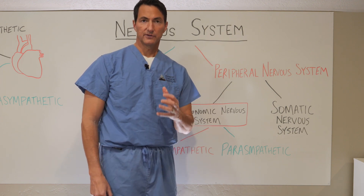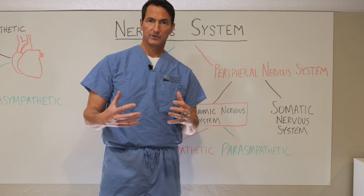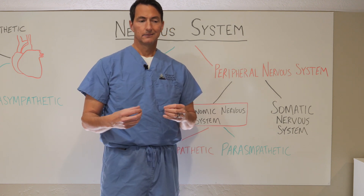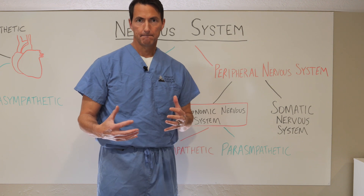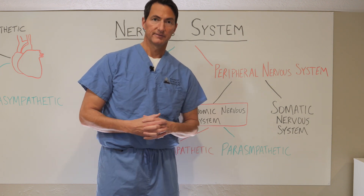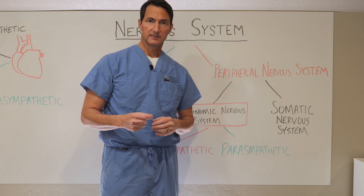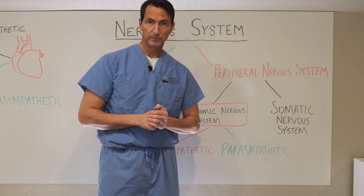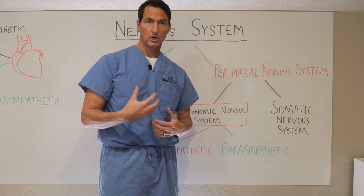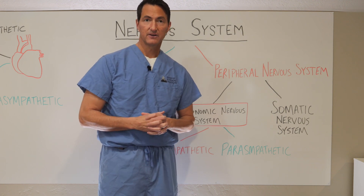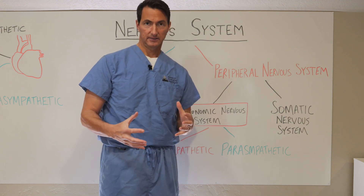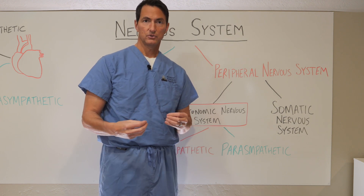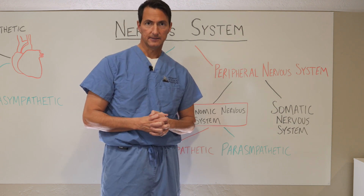The autonomic nervous system is that branch of the nervous system that is controlling all of the things that you don't think about. You might think of it as the automatic nervous system. This nervous system is controlling things such as dilation of your pupil, digestion, heart rate, bladder function, kidney function, all kinds of things — things that you don't have to think about. They're controlled automatically by the autonomic nervous system.